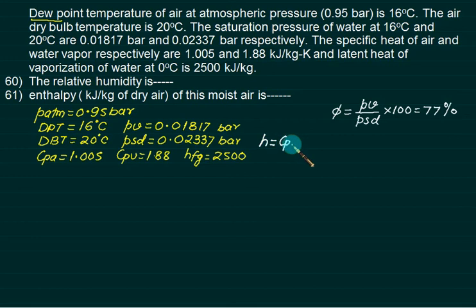Calculation is for enthalpy. Enthalpy is CP of air multiplied by dry bulb temperature plus your HFG value plus CP of vapor multiplied by dry bulb temperature. This whole value is multiplied by W. This one is water contribution and this one is air contribution. First of all, we have to find out W.